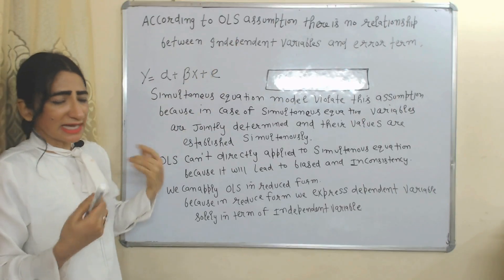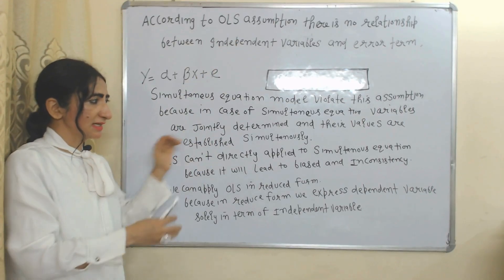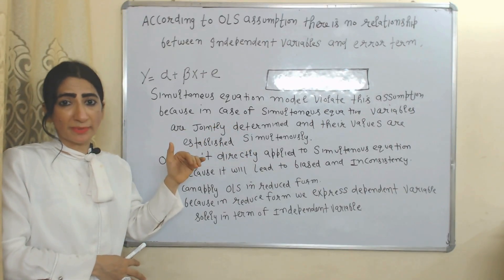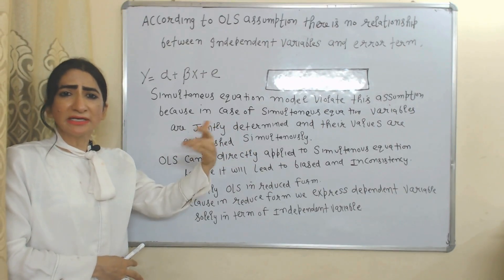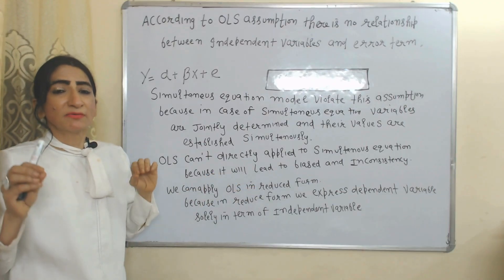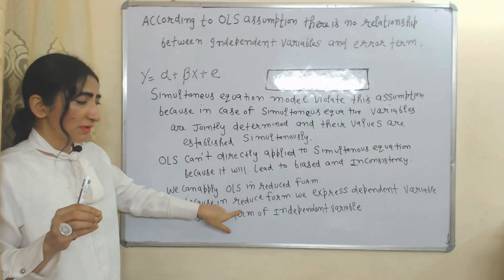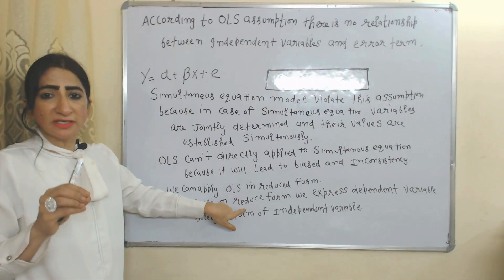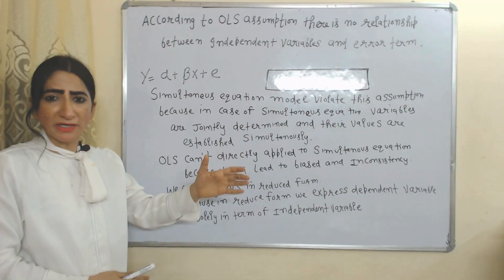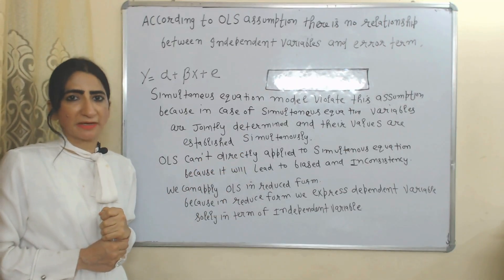That's why we cannot directly apply OLS in simultaneous equations, because if we do, it will lead to bias and inconsistency. However, we can apply OLS in reduced form, because in reduced form we express the dependent variable solely in terms of independent variables.